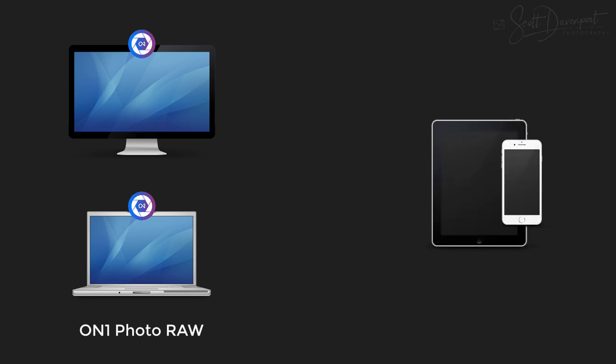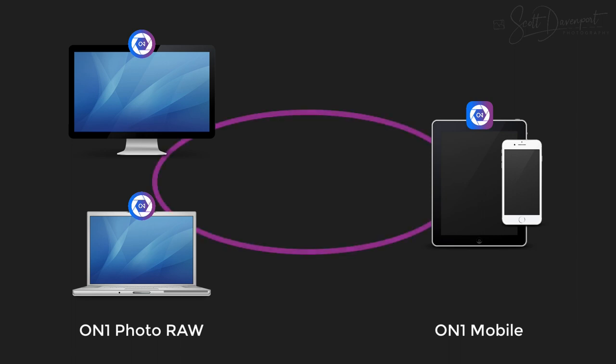A new component of the ecosystem is On1 Mobile. This is a mobile app for iOS or Android. You can capture photos with it as well as do edits on them. On1 360 connects these things and lets you synchronize your photos and your edits amongst all of your devices.